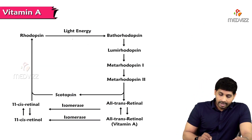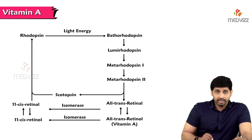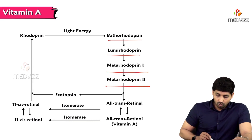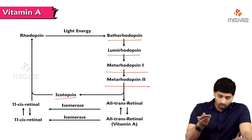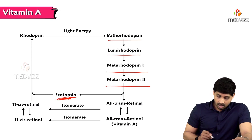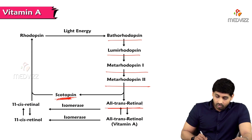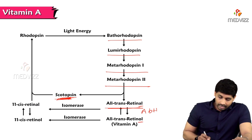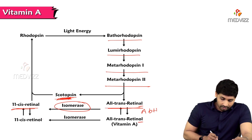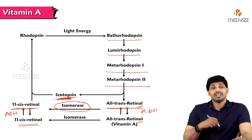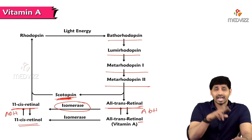When light energy falls on rhodopsin, it is converted through intermediates: bathorhodopsin, lumirhodopsin, metarhodopsin, and metarhodopsin 2, and then to scotopsin. Scotopsin is converted to 11-cis retinal and combines with opsin to reform rhodopsin. In the liver, alcohol dehydrogenase converts all-trans retinal to all-trans retinol, and then isomerase converts it to 11-cis retinal, which combines with opsin to form rhodopsin — completing the cycle.